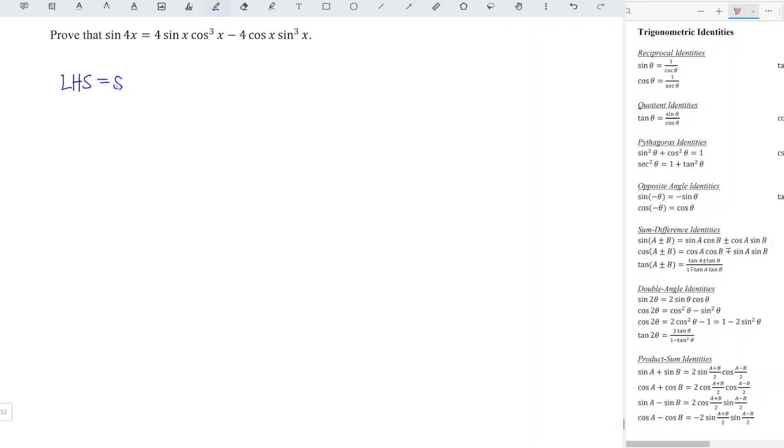Left-hand side is equal to sine 4x. We can apply the double-angle identity of sine function and rewrite the left-hand side.